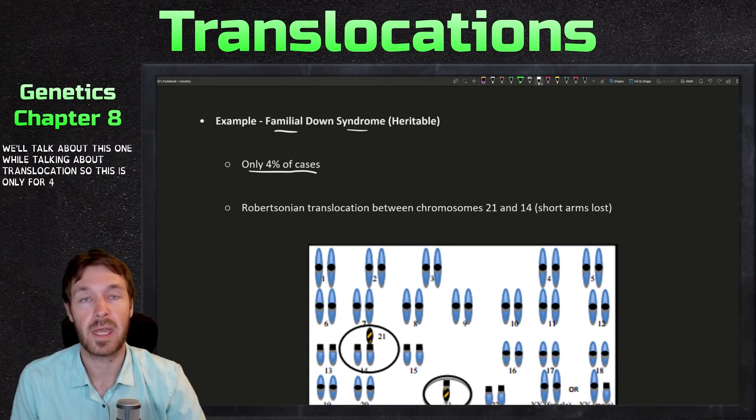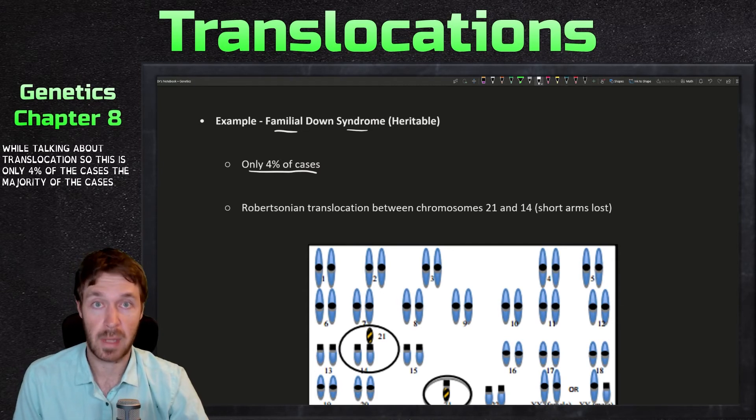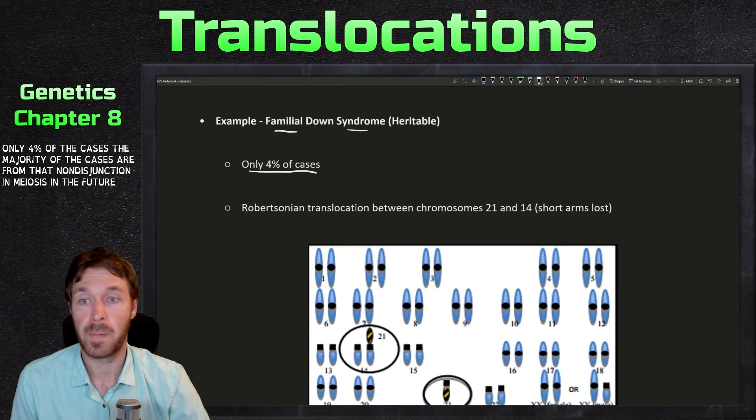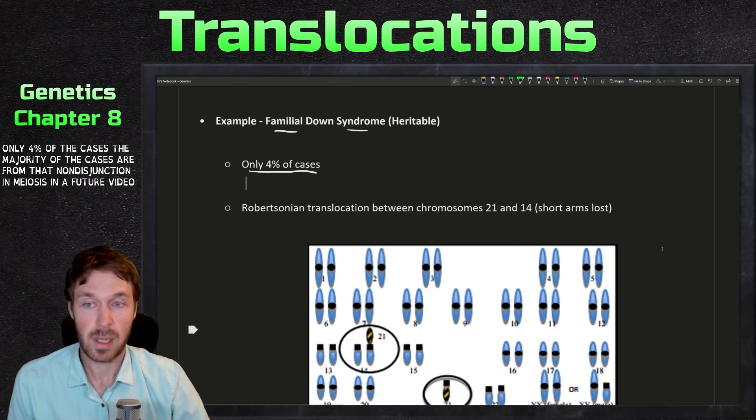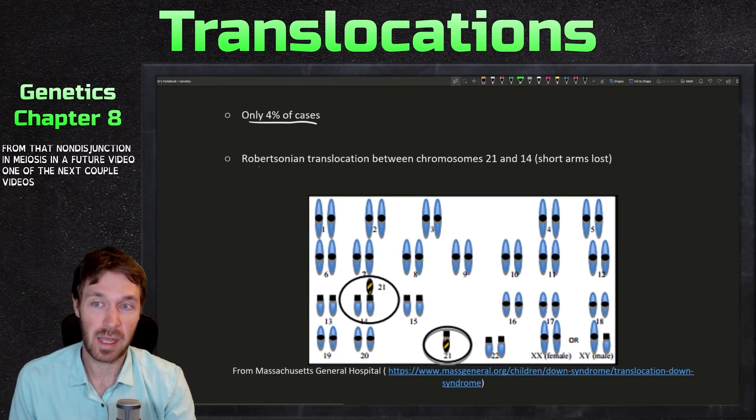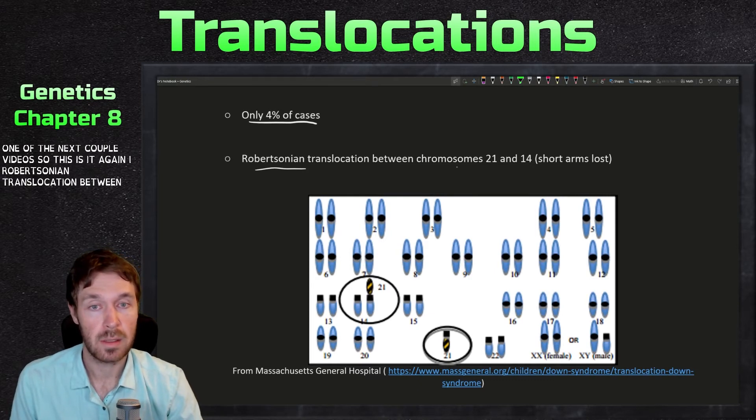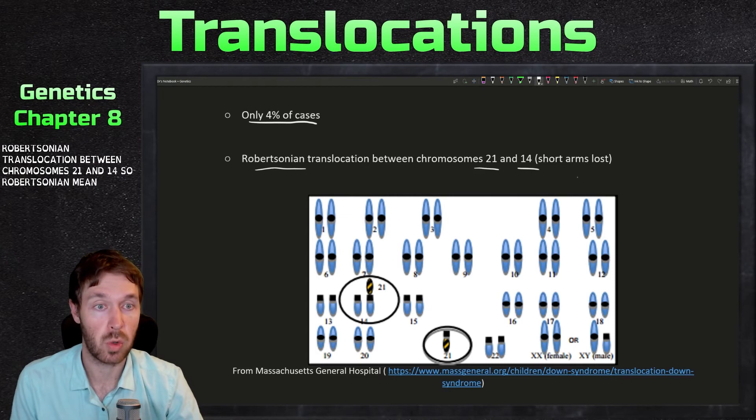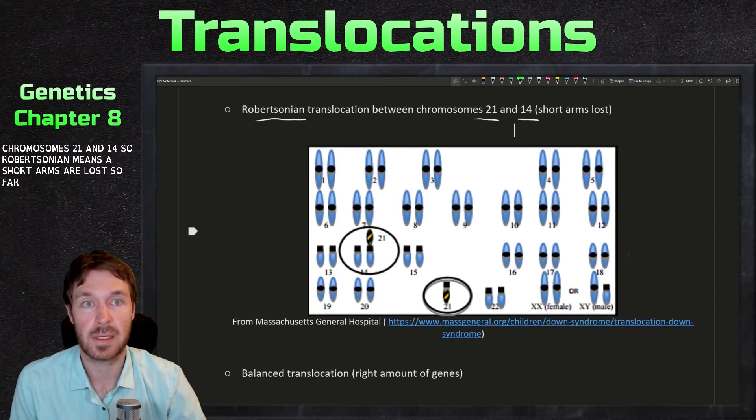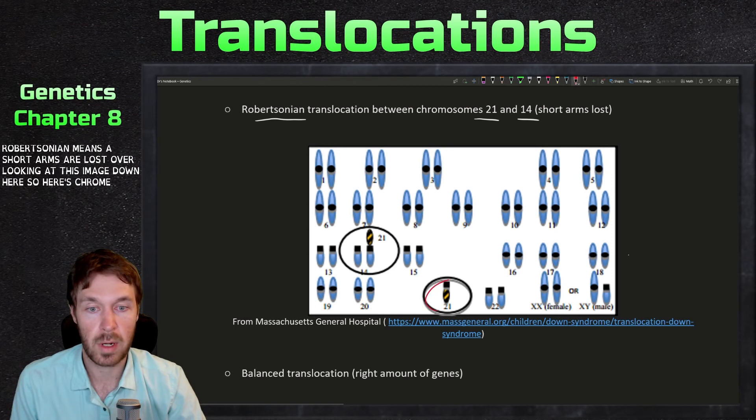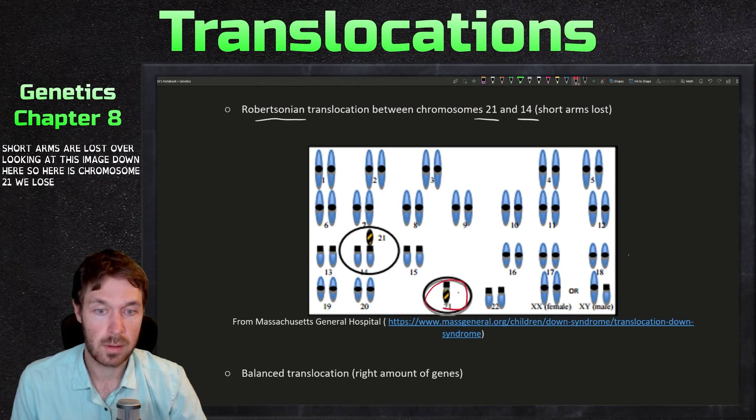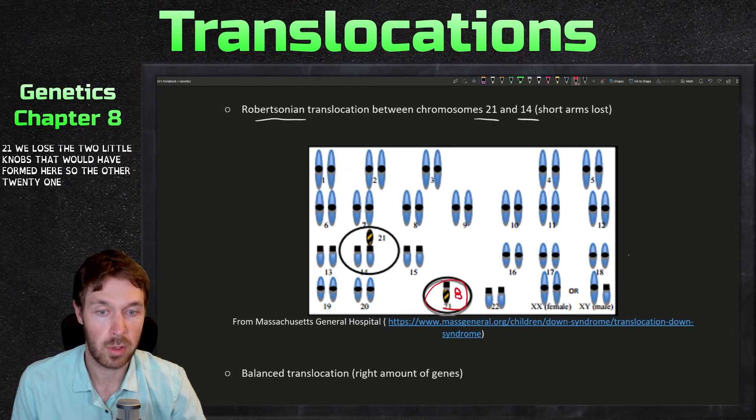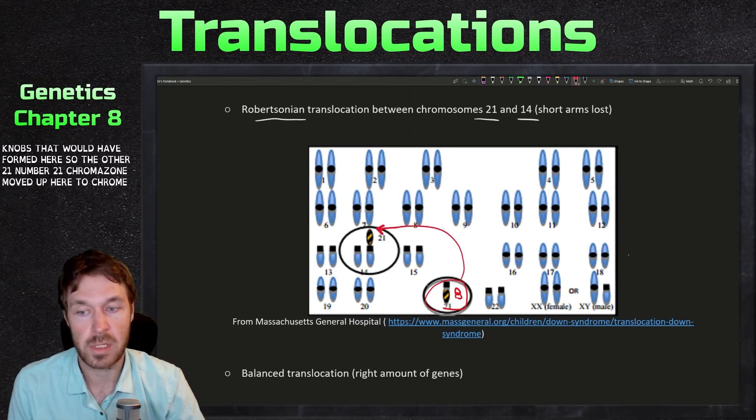So this is only 4% of the cases. The majority of the cases are from that non-disjunction in meiosis that we're going to talk about in a future video. One of the next couple videos. So this is again a Robertsonian translocation between chromosomes 21 and 14. So Robertsonian means the short arms are lost. So if we're looking at this image down here, so here's chromosome 21, we lose the two little knobs that would have formed here. So the other number 21 chromosome moved up here to chromosome 14.